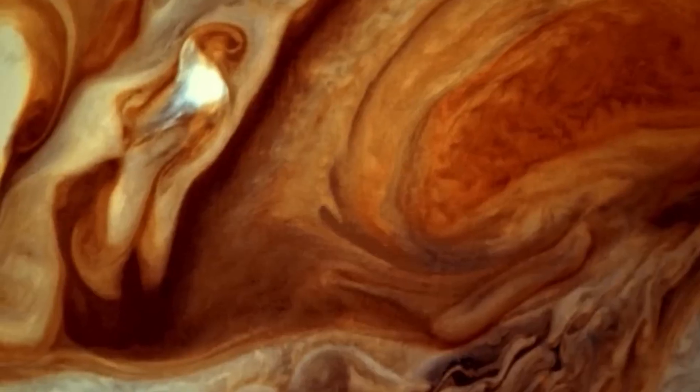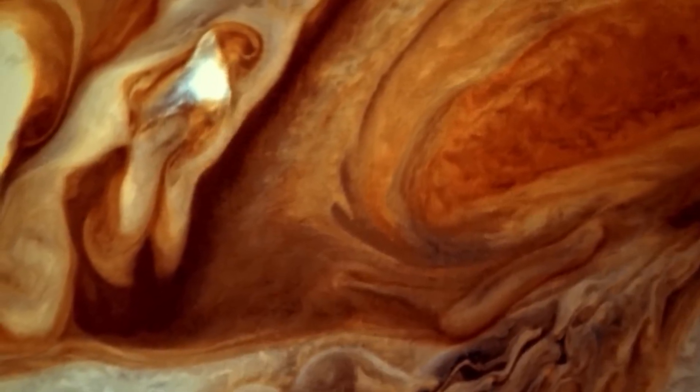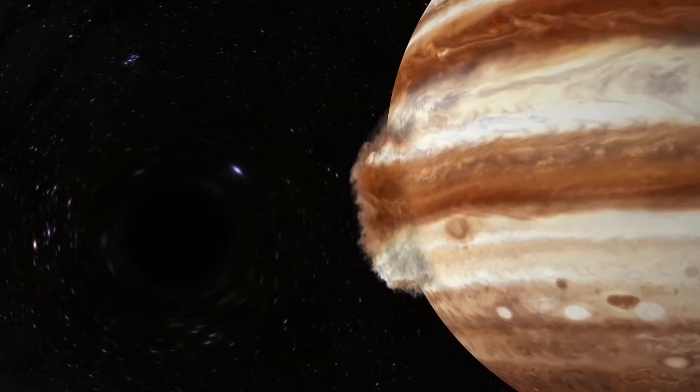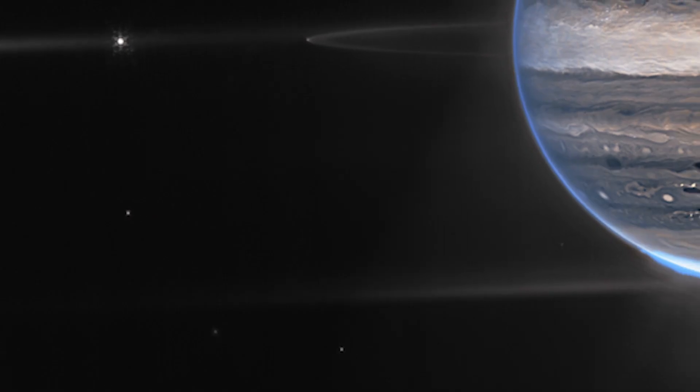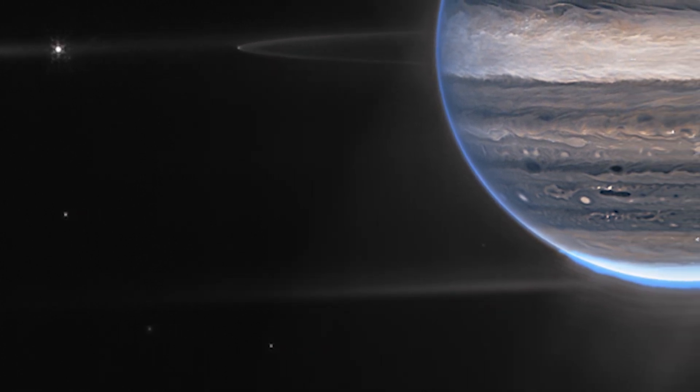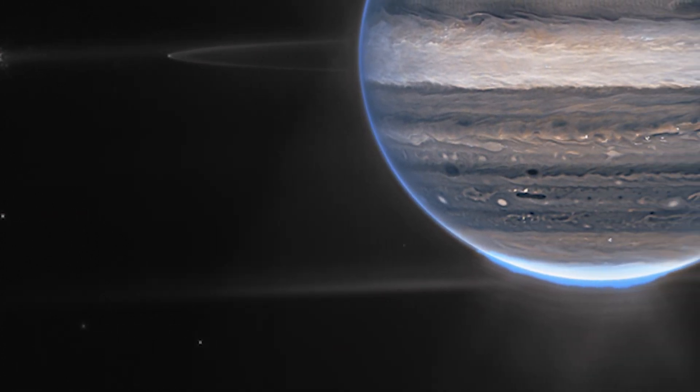The second image is a close-up of Jupiter, which was captured using three different filters to capture the details of its stormy atmosphere, including the glowing auroras.